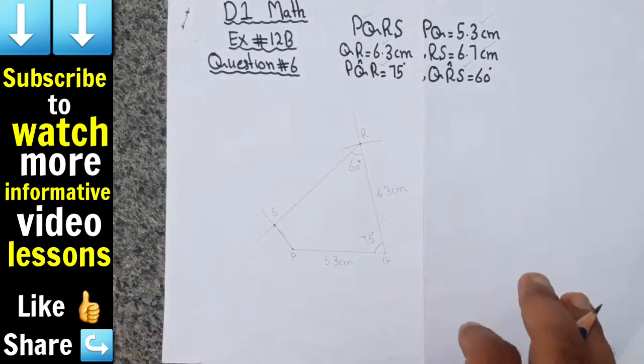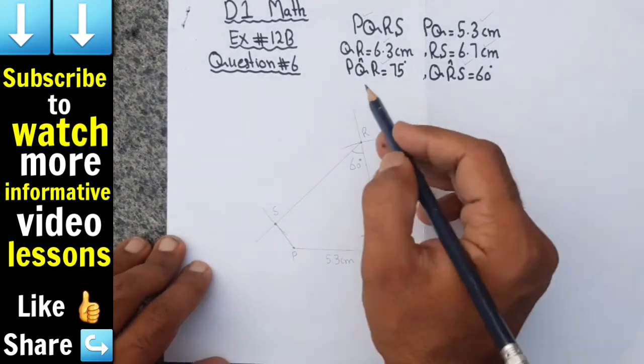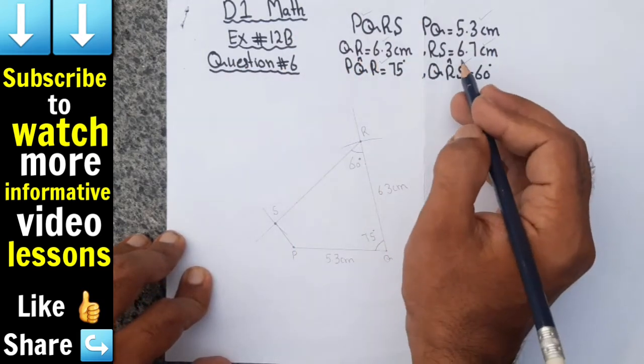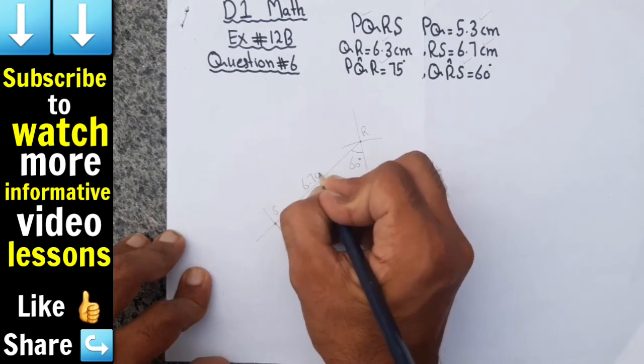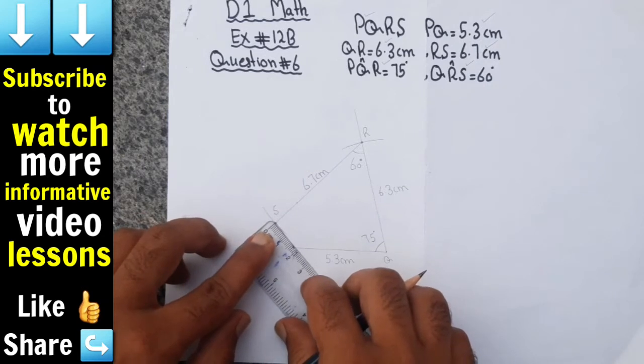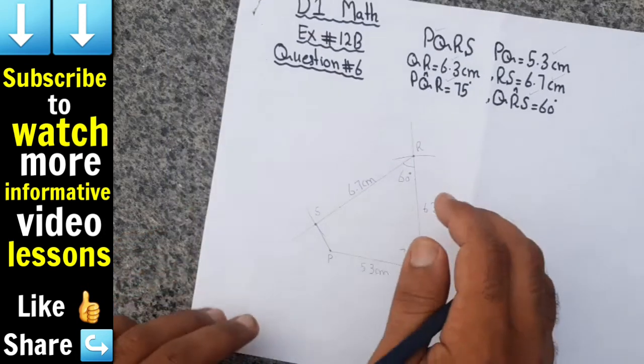Now we will join R with S. So RS equals 6.7 centimeter.